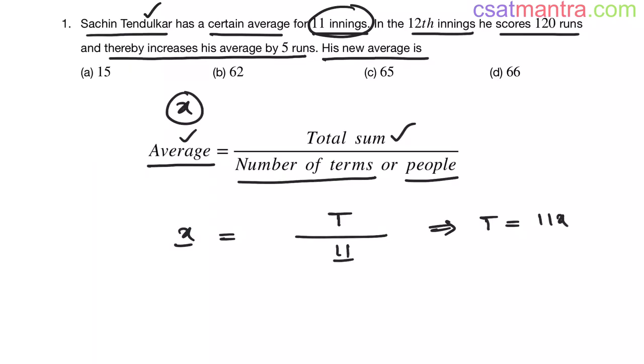Now it is said that in the 12th innings, he scores 120 runs. Number of runs scored in 11 innings is 11x. Now the new total number of runs scored in 12 innings, that is number of runs scored in 11 innings plus 11x plus number of runs scored in 12th inning, that is 120. This is clear, right?